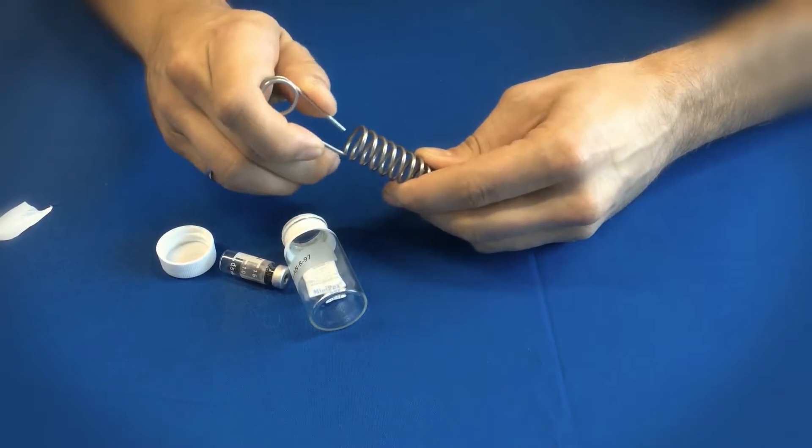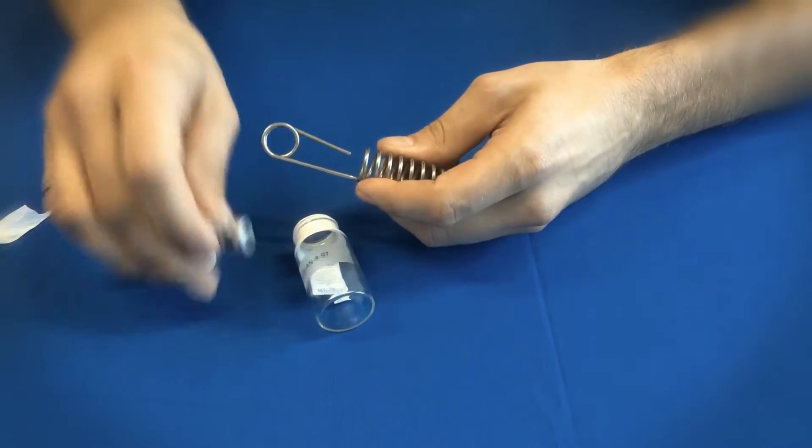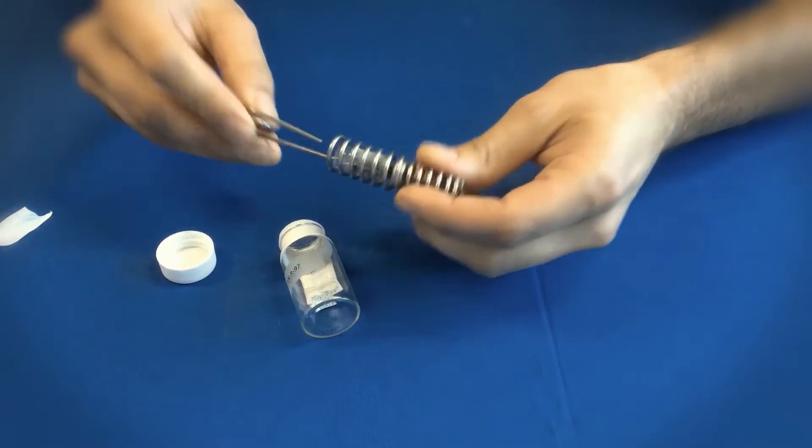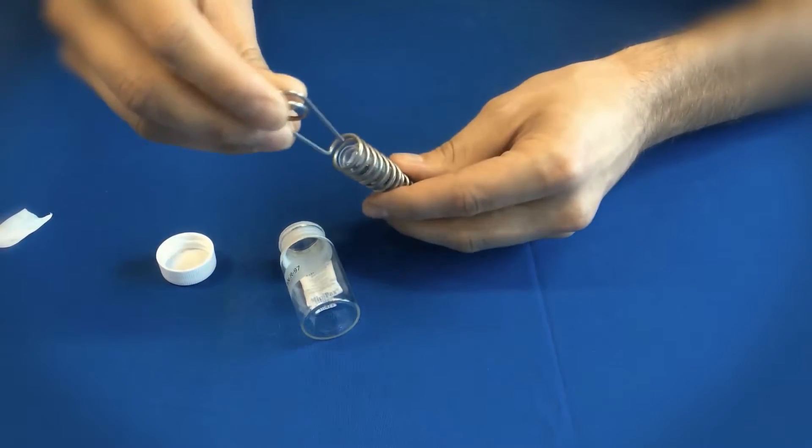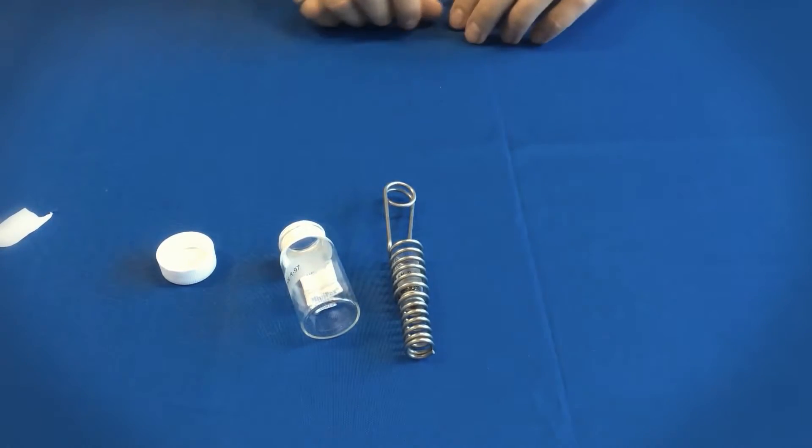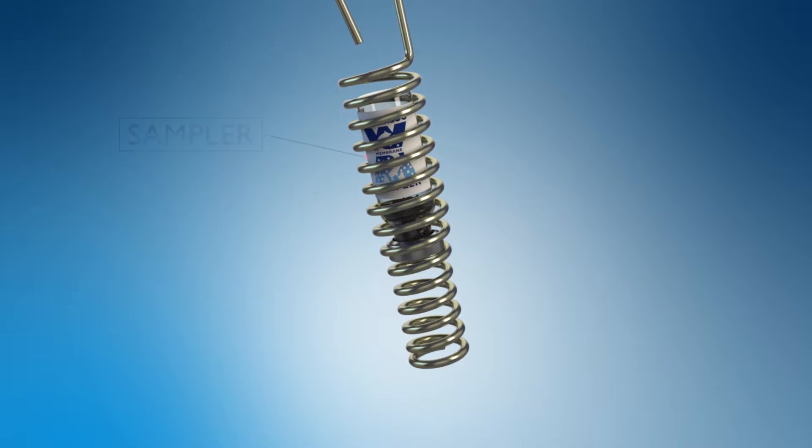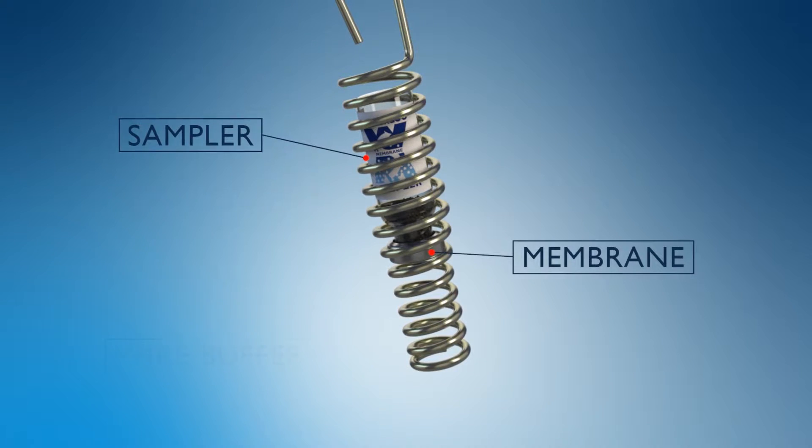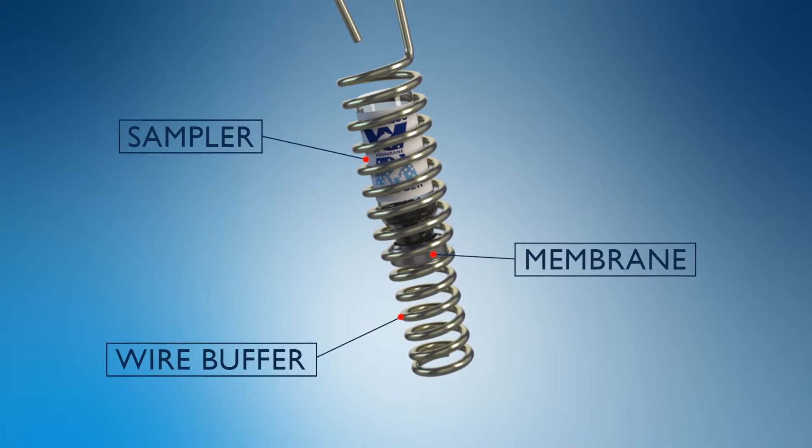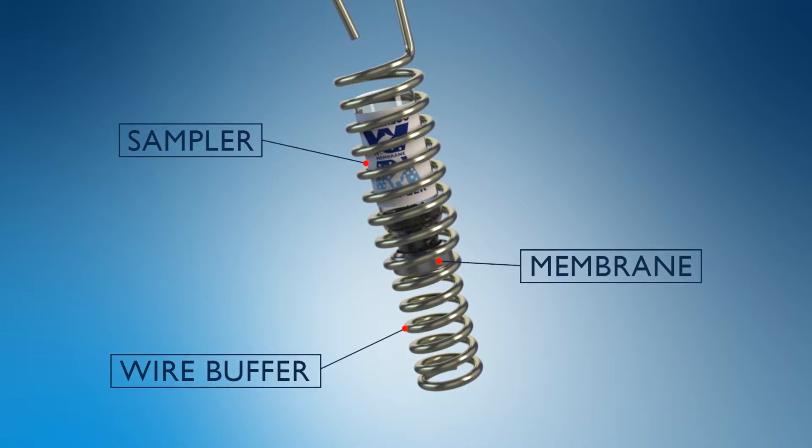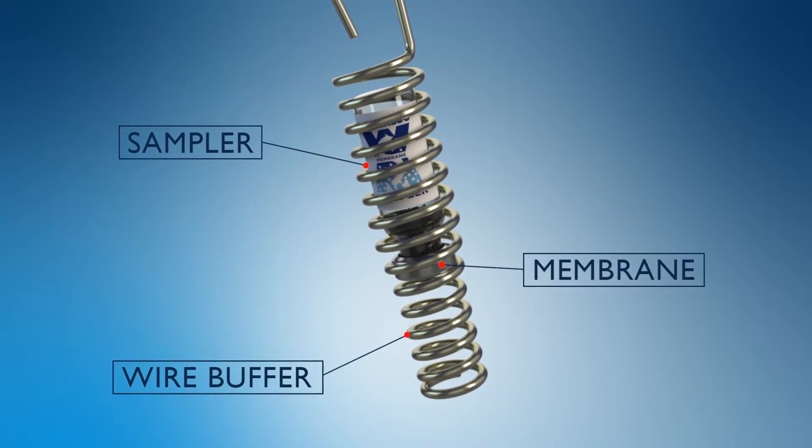Move the end of the wire hanger to one side to insert and remove the sampler. When the wire returns to its central location, it holds the sampler securely in place during sampling. The wire hanger is designed for easy insertion and removal while also holding the sampler securely in position. The bottom half of the hanger provides a wire buffer to protect the membrane of the sampler.